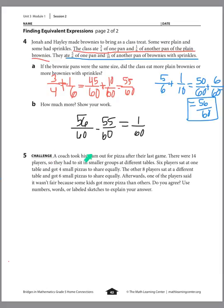Last one — the challenge: A coach took his team out for pizza after their last game. There were 14 players sitting in smaller groups at different tables. Six players sat at one table and got four small pizzas to share equally, so that's 4 divided by 6 players. The other eight players sat at a different table and got six small pizzas to share equally, so that's 6 pizzas divided by 8 players.